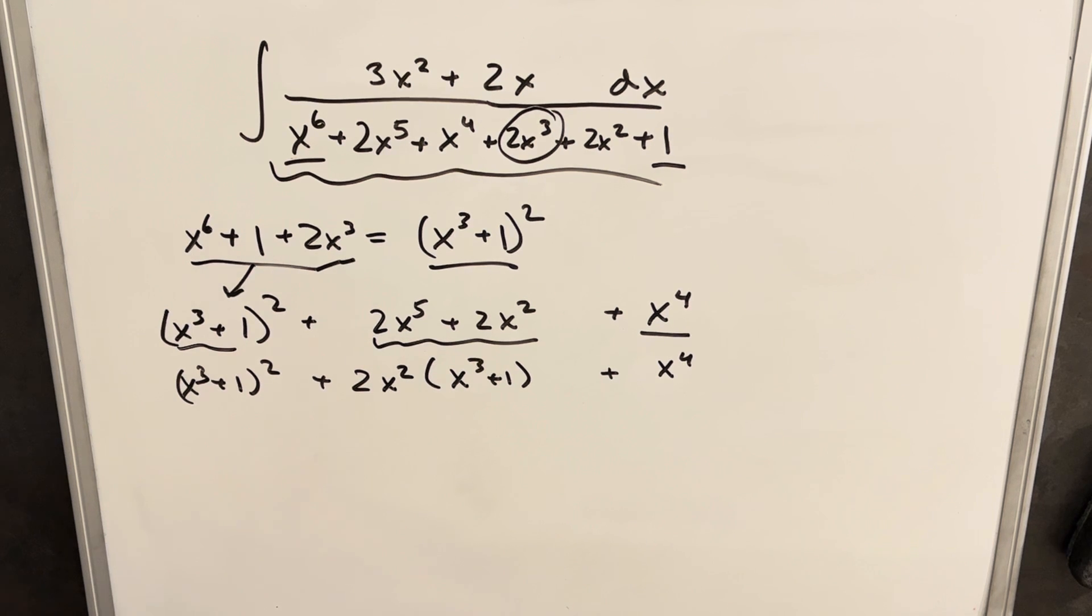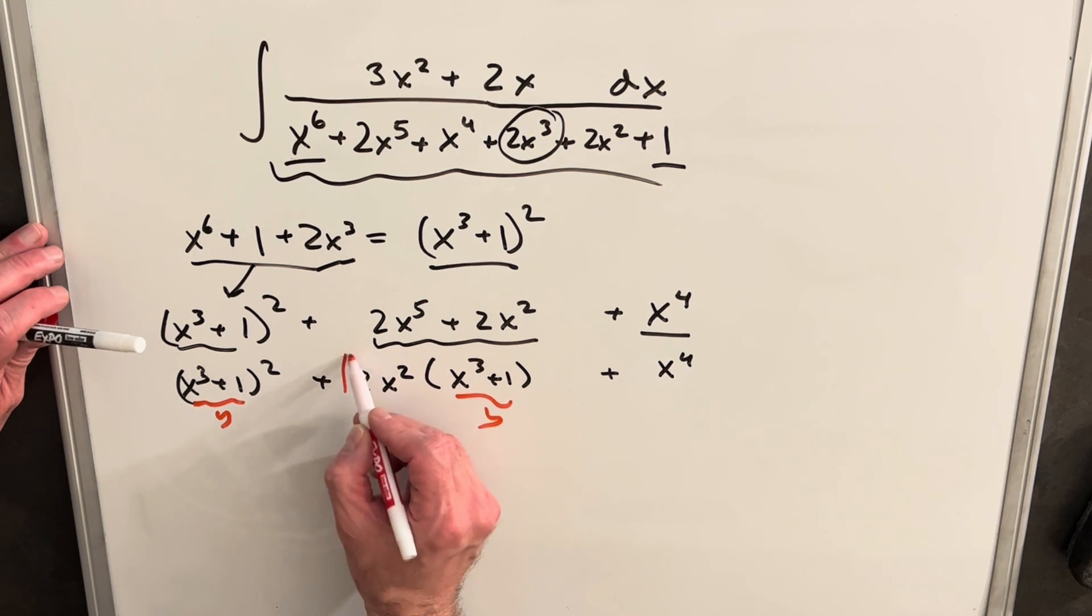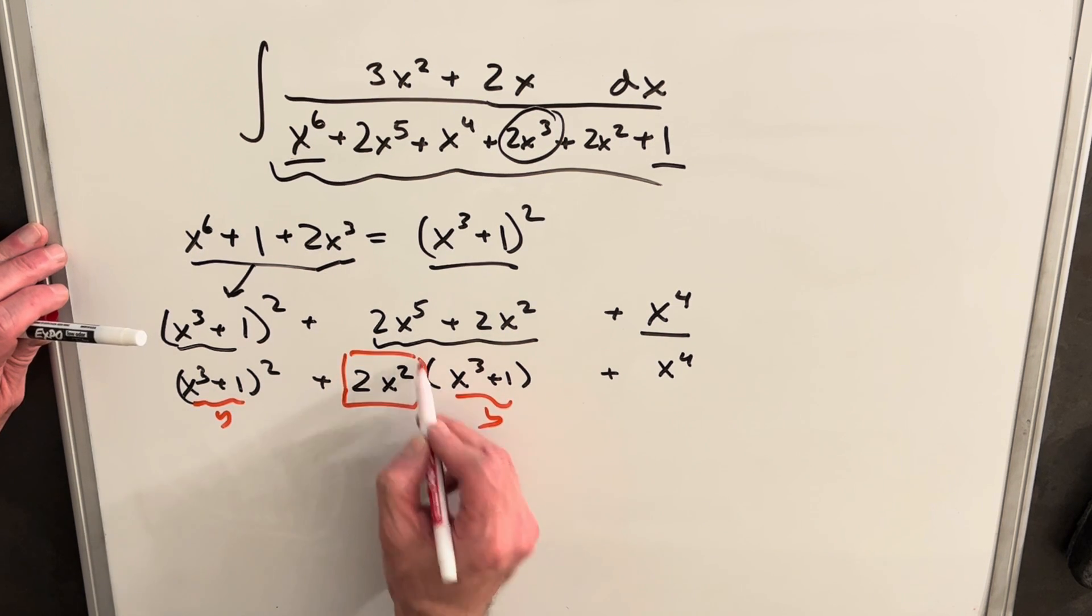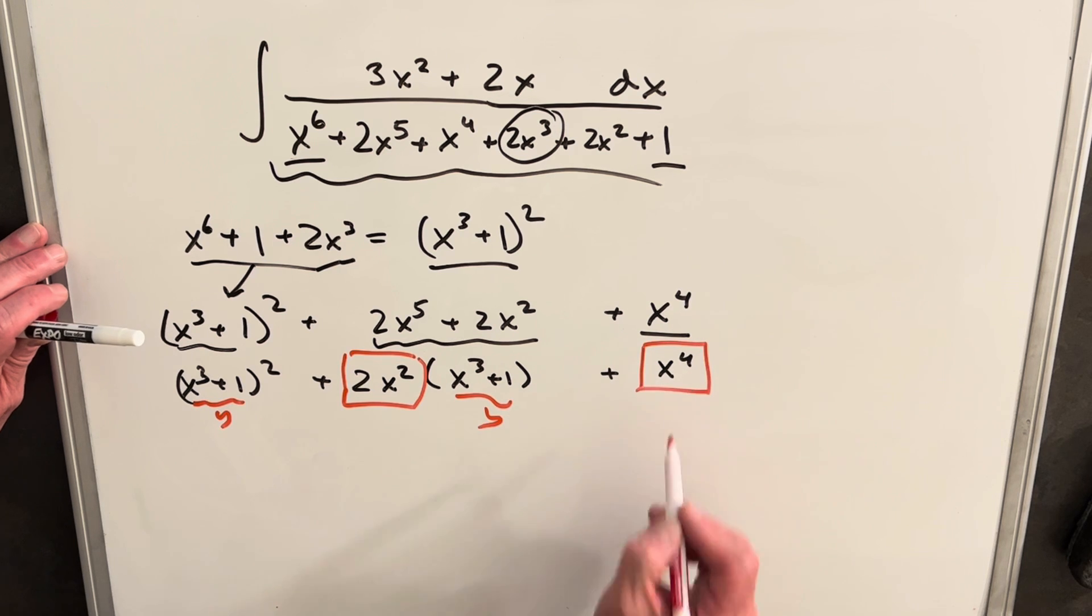So what I like to do now is just make a substitution. Since we have this common term, we'll call this term our y, and then we're going to turn this into a polynomial, and we'll just consider this like a constant.